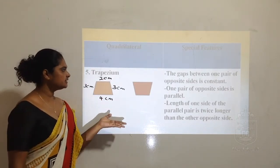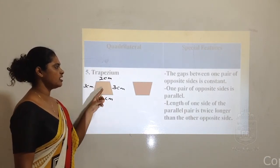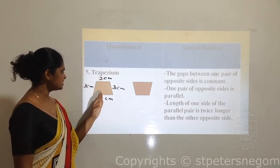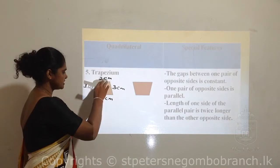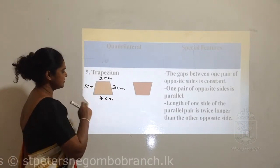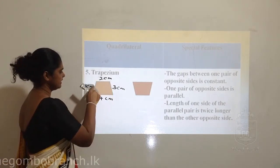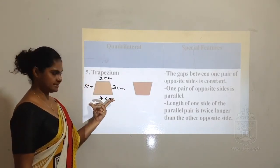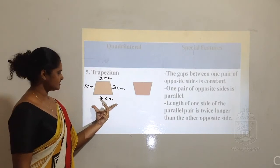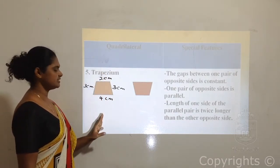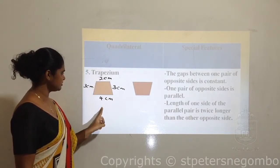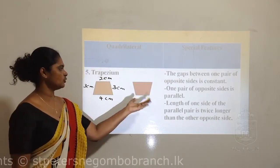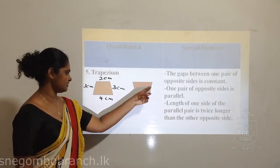The length of one side of the parallel pair is twice the other opposite parallel side. The gap between one pair of opposite sides is constant - the distance from this side to this side is similar. But the gap here is different - the distance is increasing from top to bottom. One pair has a constant gap from anywhere, so that pair is parallel. The angles in a trapezium are different and you cannot say anything specific about them.